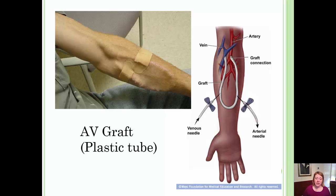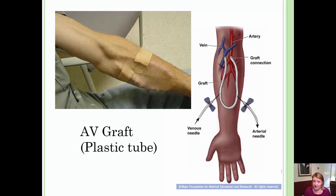Another type of access you will see in hemodialysis patients is the AV graft. An AV graft is essentially a plastic tube inserted under the skin that connects an artery to a vein. You can see in the picture the graft of the arm, which is very similar to the picture showing the fellow with the band-aids. The artery is listed at the top and through the plastic tube connection it is grafted into the vein. When hemodialysis begins, the nurse accesses one loop of the graft for arterial access and places a needle on the other side for venous return.